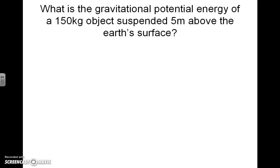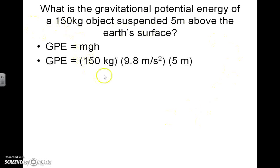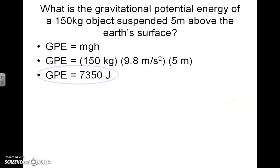Here's the next question: What is the gravitational potential energy of a 150 kilogram object suspended 5 meters above the Earth's surface? For this question, we're using the gravitational potential energy equation and making the following substitutions: 150 kilograms for mass, the known value of 9.8 meters per second squared for the acceleration of gravity on Earth, and 5 meters for height. We just multiply from left to right — I highly recommend using a calculator — and you get 7,350 joules. A kilogram times meter per second squared gives you the Newton, and a Newton times a meter is a joule.